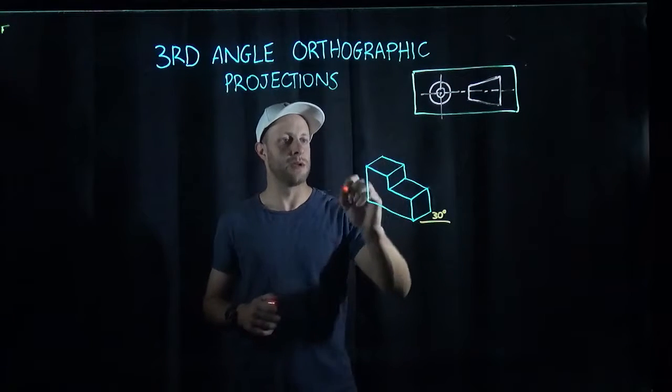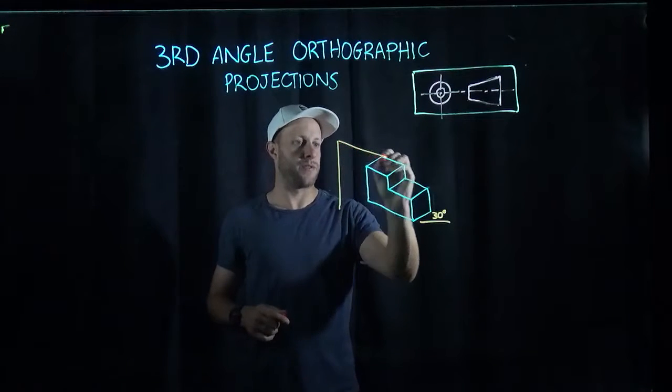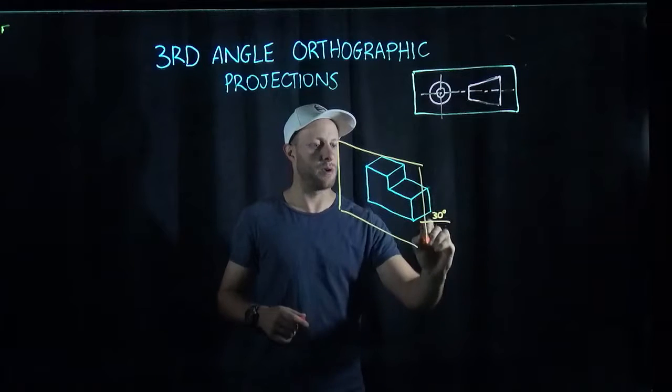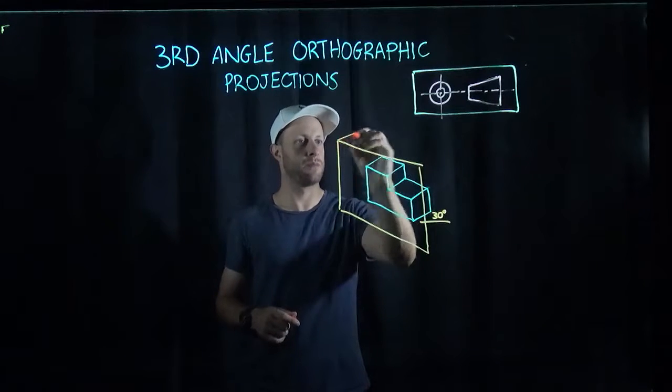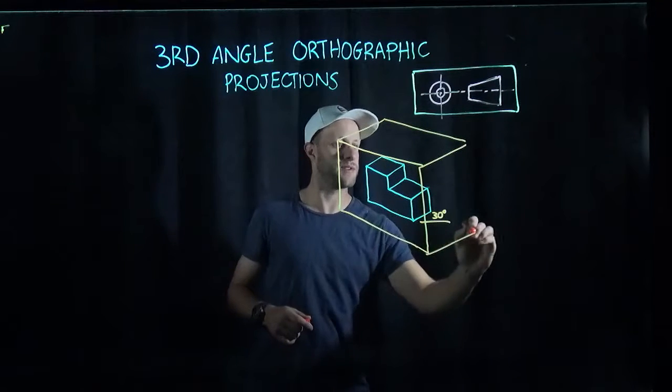That's how we can tell. Now, if we draw a box around this—imagine we put a glass cube around this particular shape. I'm going to draw that cube to help us visualize this.